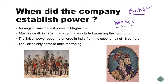When did the company establish power? Remember, 'company' always means British — the East India Company. So when did the British get power? When did they decide to go and rule India? Let me tell you.